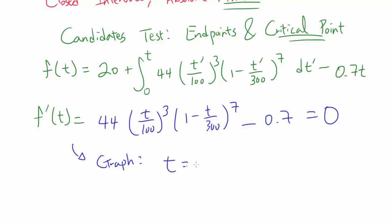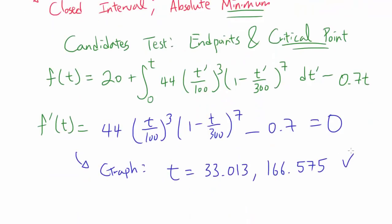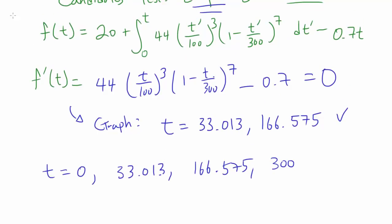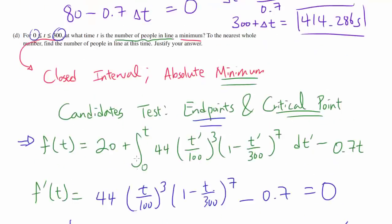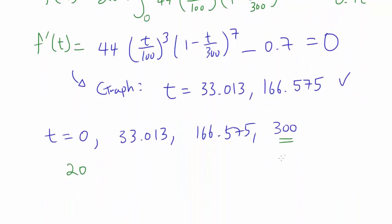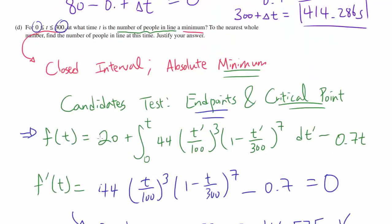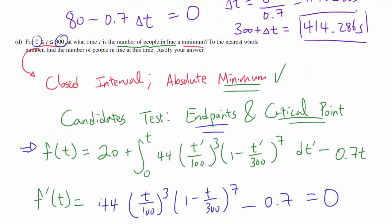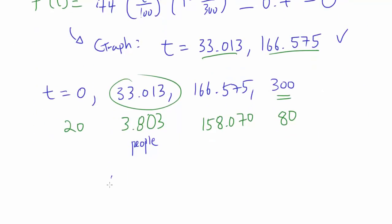And you should find the points t of 33.013 and 166.575 between 0 and 300. So we know we have our critical points. And we have our endpoints which are 0 and 300. So we want to test t of 0, 33.013, 166.575, and 300. And you plug each of these into F(t) using your calculator. But actually for t of 0, for t of 0 you know you're starting with 20 people. And at t of 300 we already calculated that there are going to be 80 people. So we know these two. But plugging this thing and this thing into your calculator, you should get 3.803 for the first one and 158.070 for the second one. So which one is going to get you the minimum? Well, that's this time. And we should have 3.803 people. And they want us to round to the nearest whole number. So our answer is going to be 4.